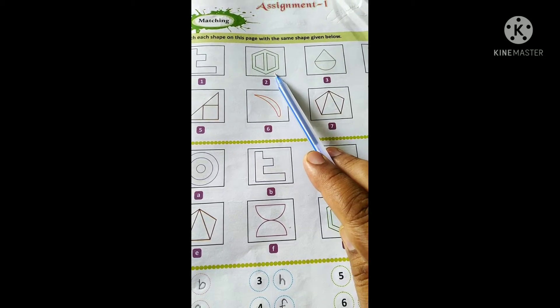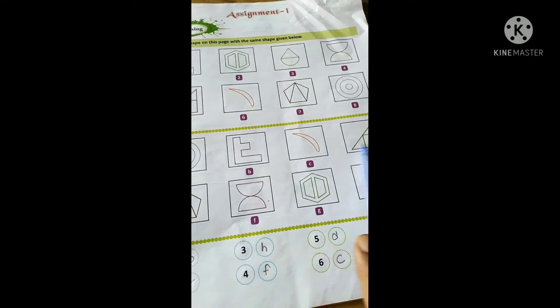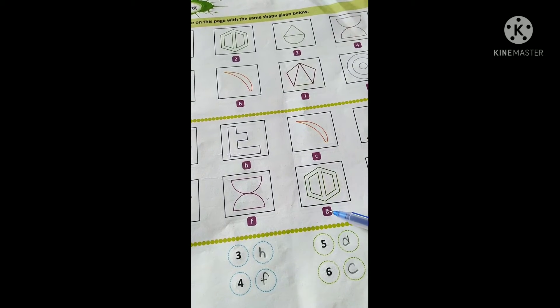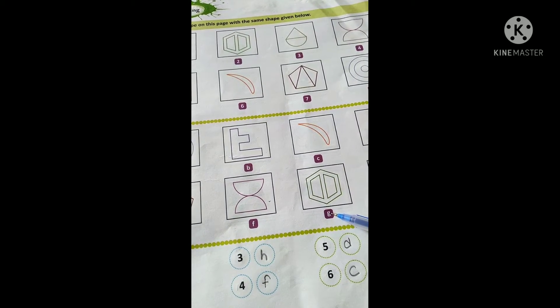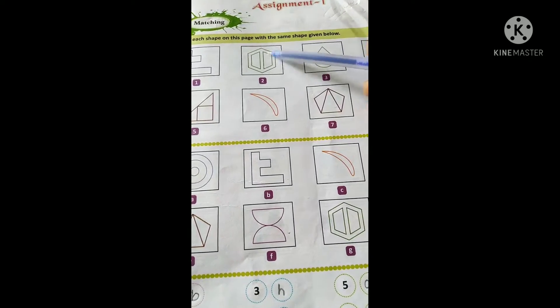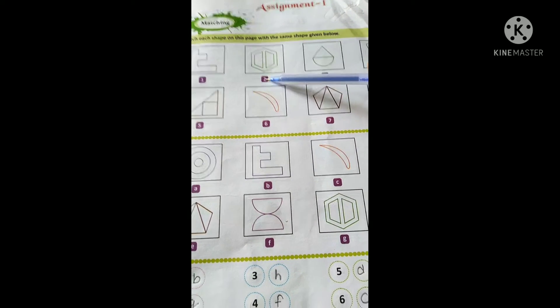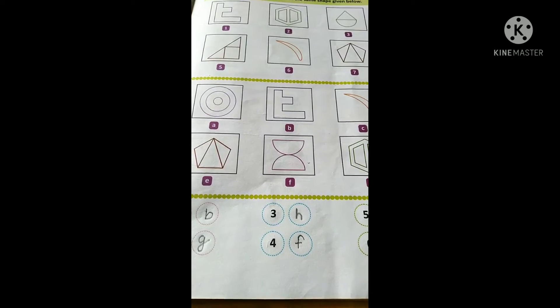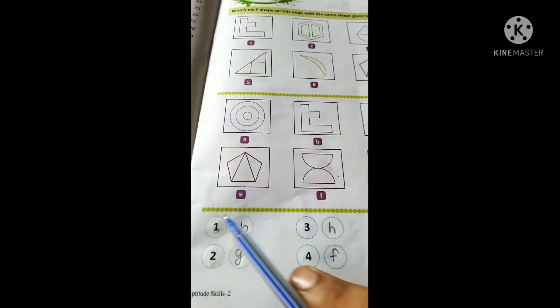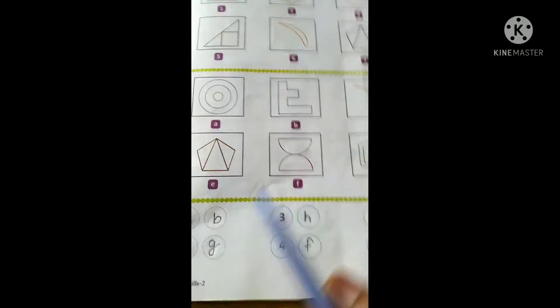Now see, this figure matches with number G. Here the number is given G and this figure number is—sorry, 2. G figure. So in front of 2, we write G. This is the same.